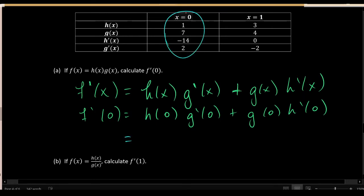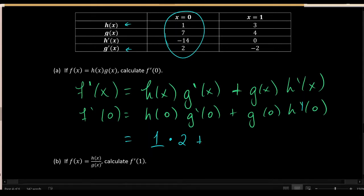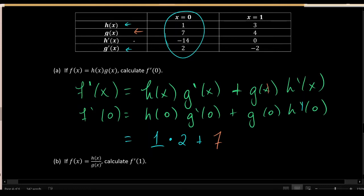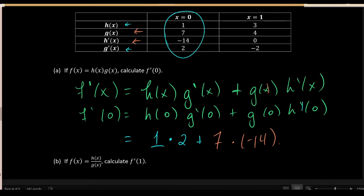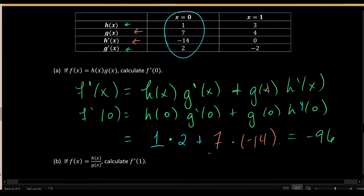Looking at the table: h of zero outputs 1; g prime of zero outputs 2; g of zero outputs 7; and h prime of zero outputs negative 14. So f prime of zero equals 1 times 2 plus 7 times negative 14. Calculating that value gives negative 96 if my arithmetic is correct.